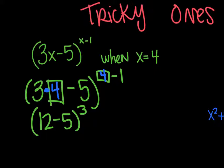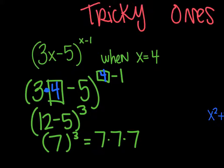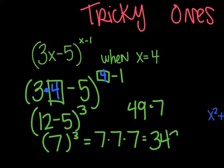12 minus 5 is 7. And then 7 is in the parentheses to the third power. That means 7 times 7 times 7. 7 times 7 is 49. So 49 times 7. If you don't know that, you're going to have to do the math on it. Your answer is going to end up being 343.